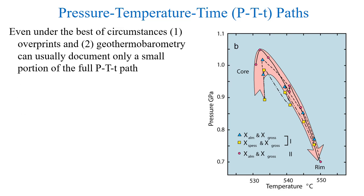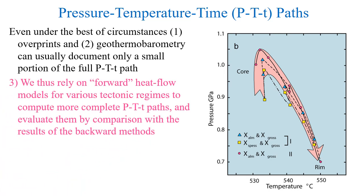Even under the best circumstances, overprints and geothermometry can usually document only a small portion of the full pressure-temperature-time path. Thus, we have to rely on forward heat flow models for various tectonic regimes to compute a more complete P-T-t paths, and evaluate them by comparison with the results of backward methods.